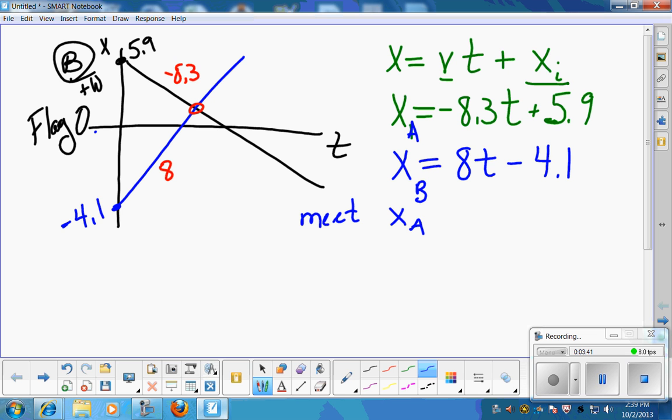The key to this is to realize that when they meet each other, they're at the same place at the same time. So, the position of A is going to be equal to the position of B. I'm going to set my two equations equal to each other. So, negative 8.3t plus 5.9 is equal to 8t minus 4.1. Now, what you want to make sure is true is if you look at your equations, the one that has a positive initial position has a negative velocity, and the one that has a negative initial position has a positive velocity. You could have set it up differently, but regardless of how you did it, it has to be true that positive initial position goes with negative velocity and negative initial position goes with positive velocity.